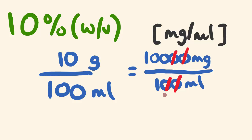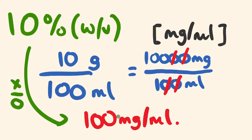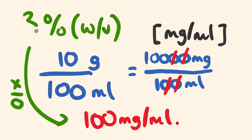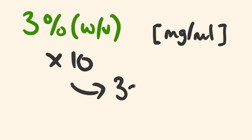There are two zeros on top and two zeros on the bottom, so I can cancel them out, leaving 100 milligrams per mil. And here's a little shortcut: if you want to go straight from the percentage into milligrams per mil, just multiply by 10. So 10 times 10 equals 100. Say it was 3% — I wanted to know what it is in milligrams per mil — I just times it by 10, and it is 30 milligrams per mil.